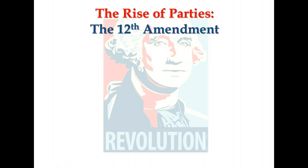The 12th Amendment: The election of 1800 produced another notable result — the 12th Amendment. This amendment was added to the Constitution in 1804 to make certain that there would never be another such fiasco. The amendment is lengthy, but it made only one major change in the Electoral College system: it separated the presidential and vice-presidential elections. Quote: 'The electors shall name in their ballots the person voted for as president, and in distinct ballots the person voted for as vice-president.' With the appearance of parties, the election of 1800, and the 12th Amendment, the constitutional framework was laid for the presidential selection system as it exists today.